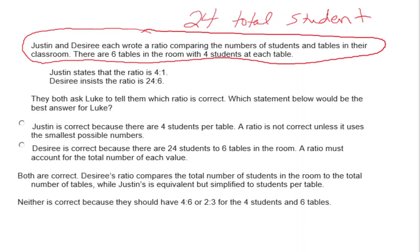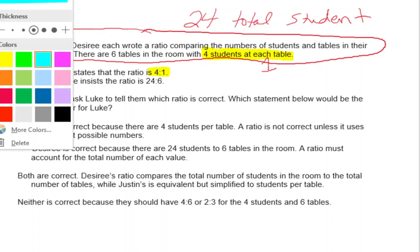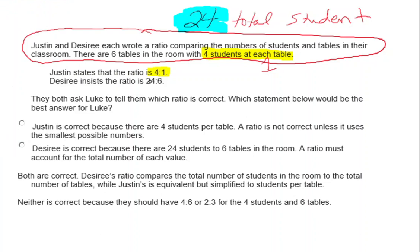Justin states the ratio is four to one — four students at each one table, meaning four students per table. Desiree insists the ratio is 24 to 6. She got 24 from the total number of students and 6 from the total number of tables. So instead of writing how many per table, Desiree is writing total students to total tables.